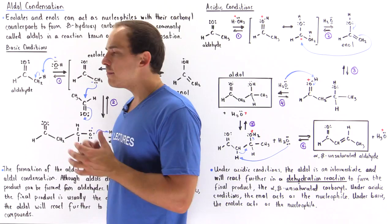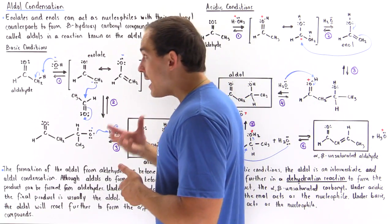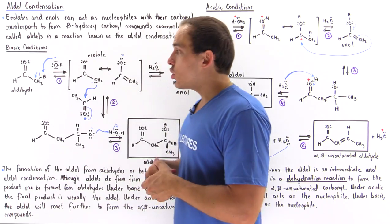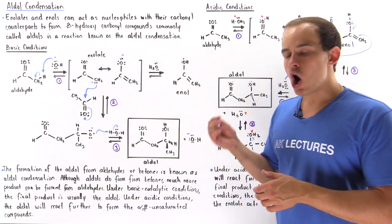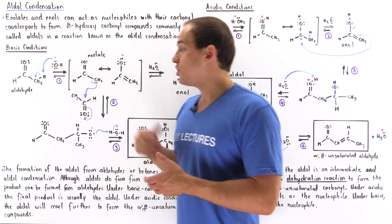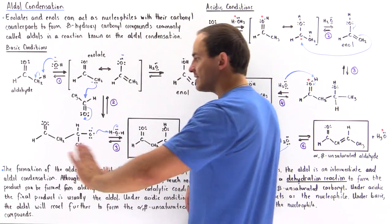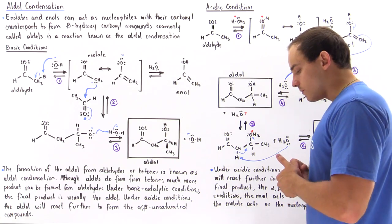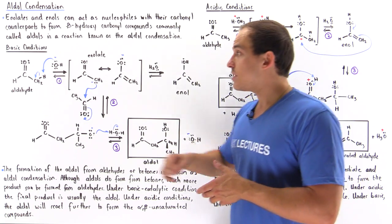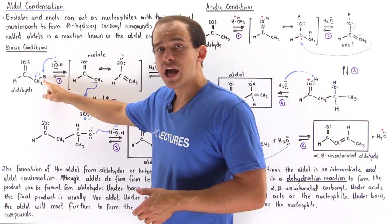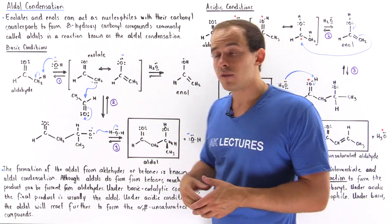Let's begin by examining the reaction mechanism under basic conditions. Under basic conditions, our base acts as our catalyst. We can begin with any type of carbonyl, as long as that carbonyl contains an alpha-carbon. In this case we use an aldehyde, but we can also use a ketone. In the first step, the base hydroxide reacts with our aldehyde and grabs the alpha-H atom off of the alpha-carbon to form the resonance-stabilized intermediate we call the enolate.